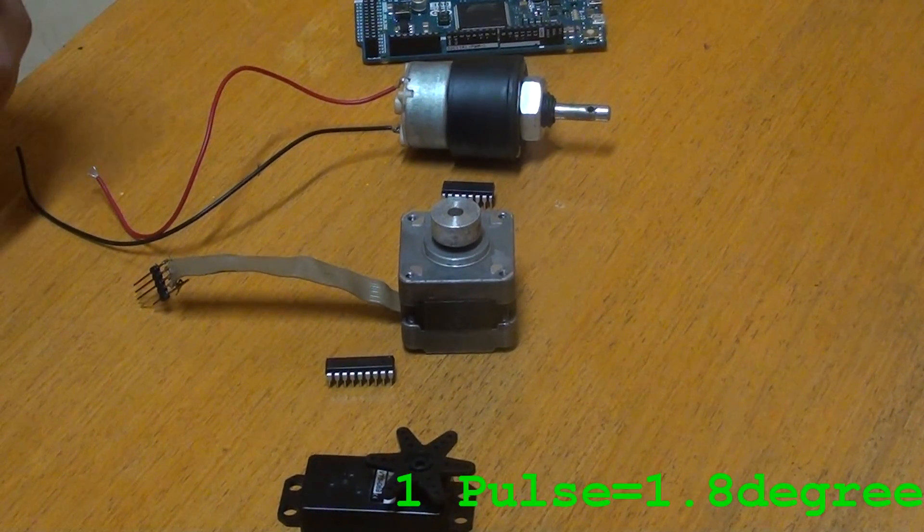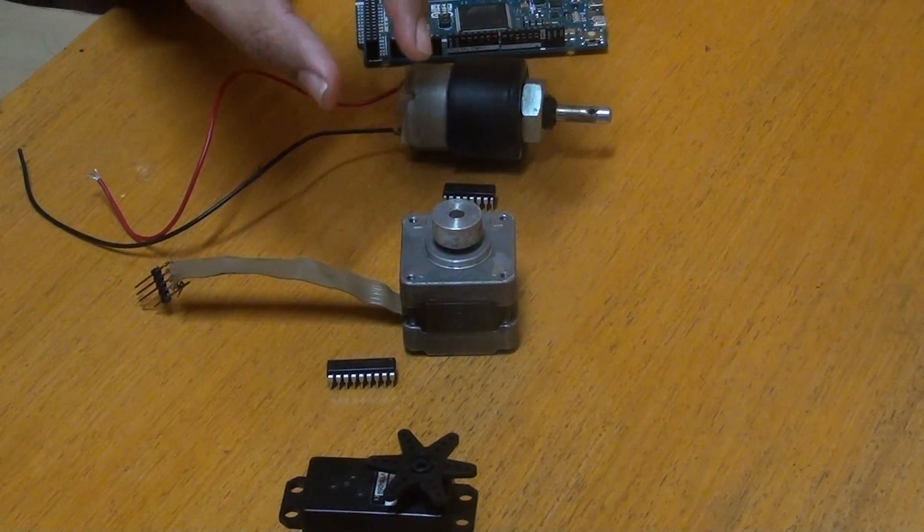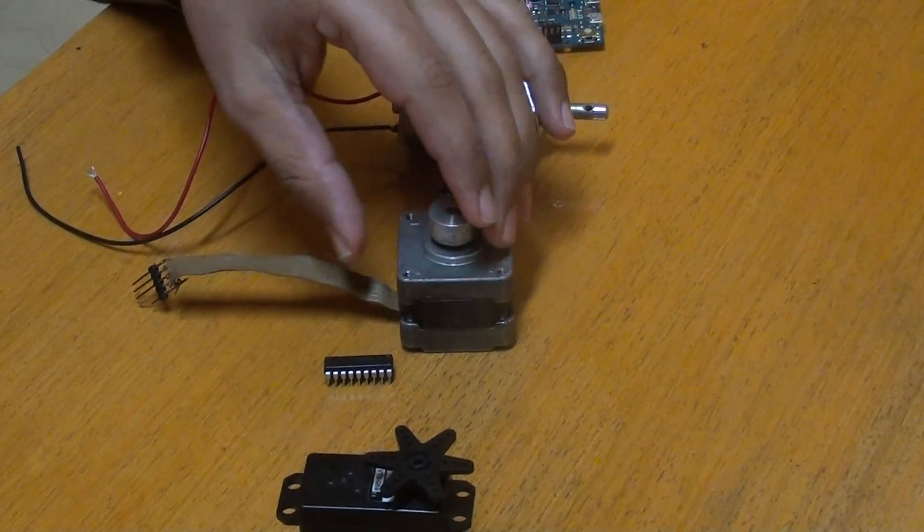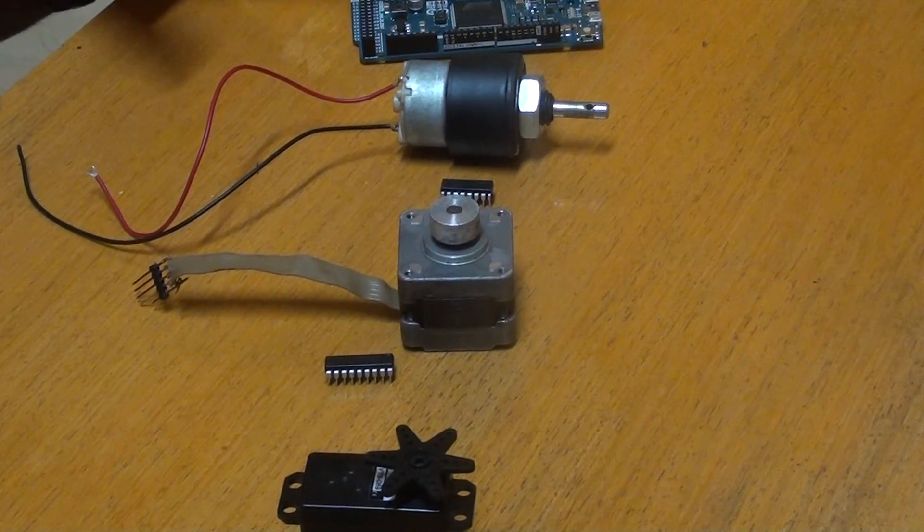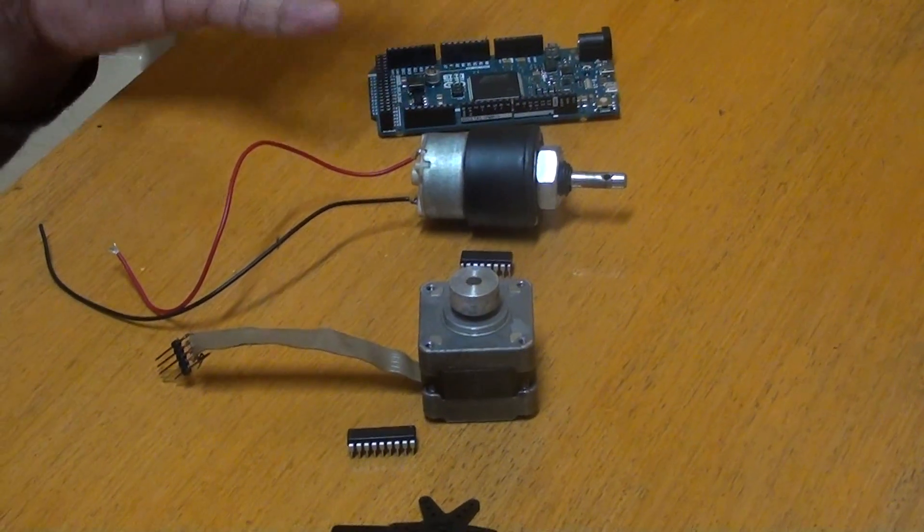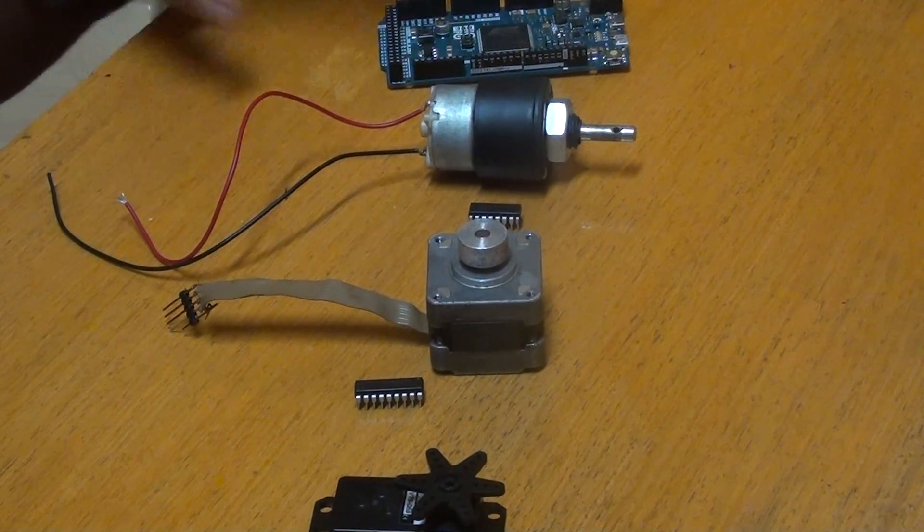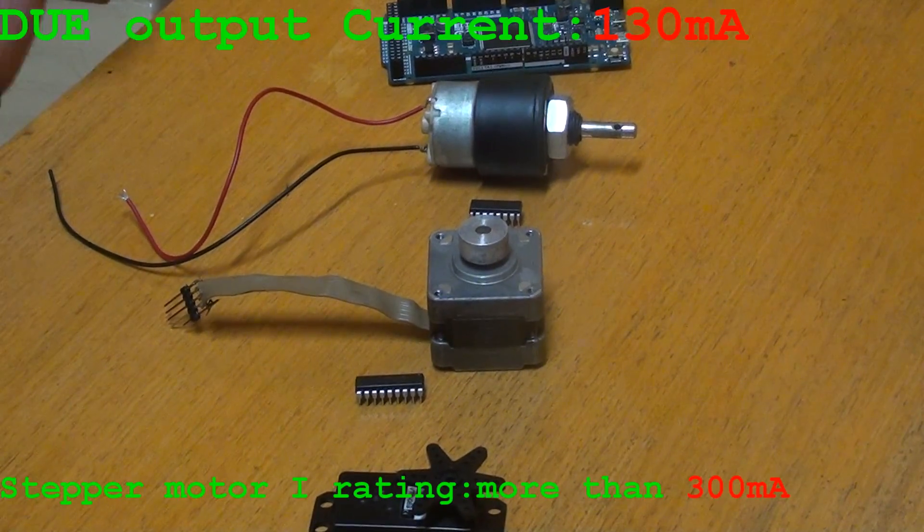Again, there is a similar issue that we faced with the DC motor. If you connect the stepper motor directly with the Arduino Doom, there is a shortage of power supply because the Arduino Doom supplies just 130 milliamps on all digital I/O pins, while the stepper motor rating is more than 300 milliamps.